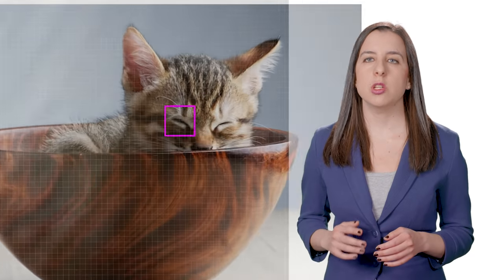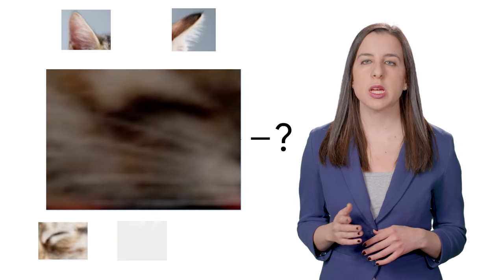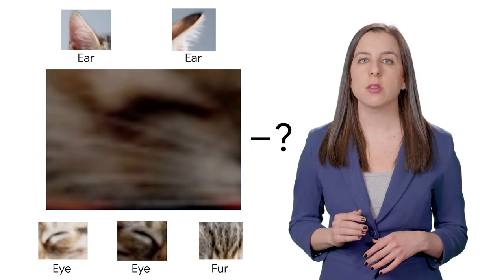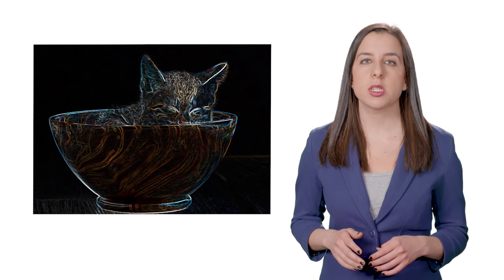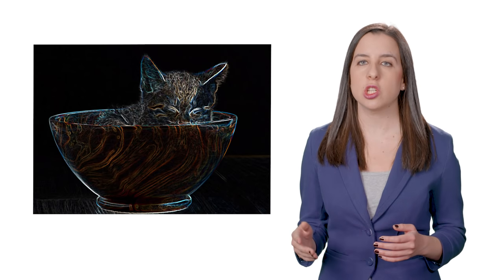CNNs work by breaking an image down into smaller groups of pixels, called a filter. Each filter is a matrix of pixels, and the network does a series of calculations on these pixels, comparing them against pixels in the specific patterns the network is looking for.